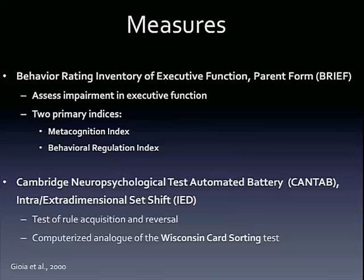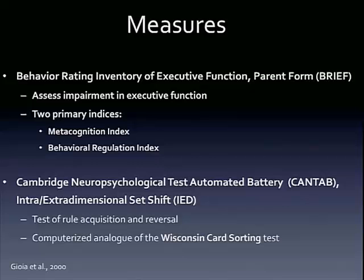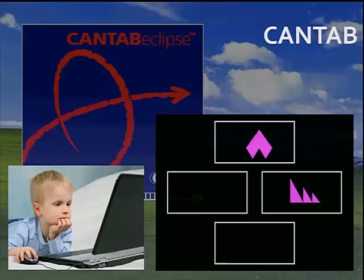For the second measure we used, the CANTAB IED — the Cambridge Neuropsychological Test Automated Battery — this is not a parent report; this is a computerized battery, basically an analog to the Wisconsin card sorting task. In order for someone to proceed through the test, they meet a set of criterion and continue through certain trials. This looks at rule acquisition and reversal. The participant would press one of the shapes, get feedback to see if they were correct or not, and then continue pressing the shapes until they get the right answer.